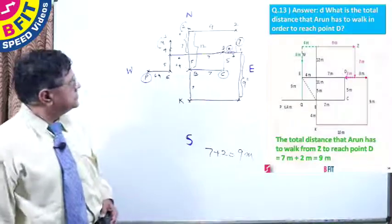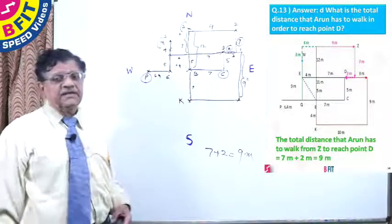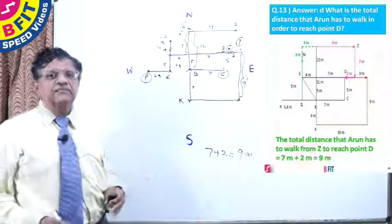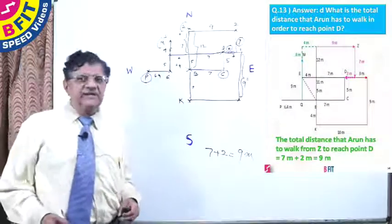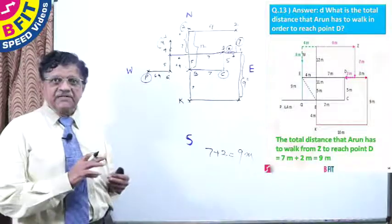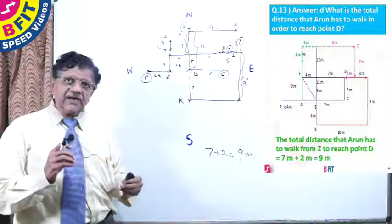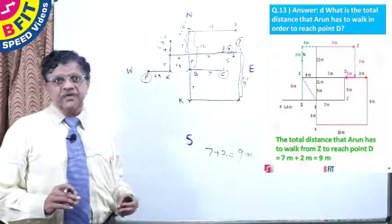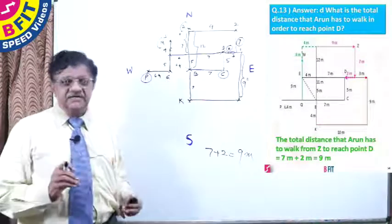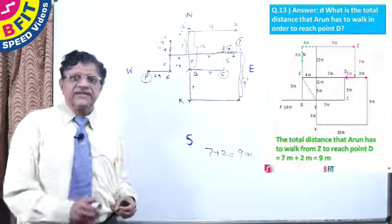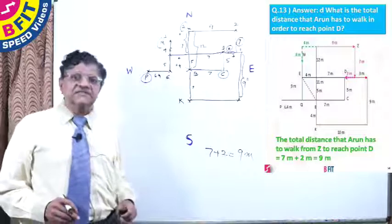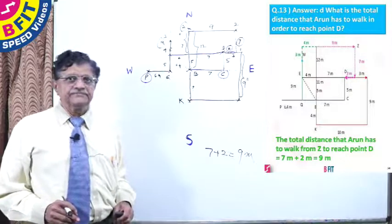This is a typical example of an RBI Grade B exam question. As you can see, it is a very complex question with 4 sub-questions piggy-backing upon each other, and each question has its own additional data. One has to be very careful in drawing the directions as well as the distances in order to arrive at the correct answers.